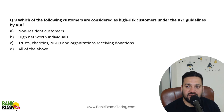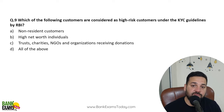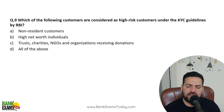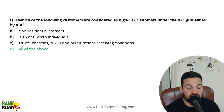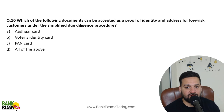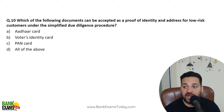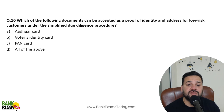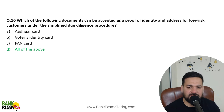Which customers are considered high-risk category? High-risk customers include NRIs, High Net Worth Individuals (HNIs), trusts, charities, NGOs, and organizations receiving donations. For low-risk customers under the Simplified Due Diligence procedure, which documents can be accepted as proof of identity and address? Aadhaar card, voter card, and PAN card can be accepted.